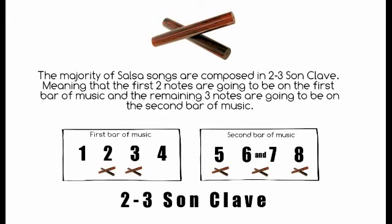So let's have a listen: 1-2-3-4-5-6-7-8, 1-2-3-4-5-6-7-8. As you can hear, the first two notes of the clave in the first bar fall on beats number 2 and 3. And on the second bar, the notes fall on beat number 5, on the sixth and, and the third note falls on beat number 8. So let's have a listen again: 1-2-3-4-5-6-7-8.